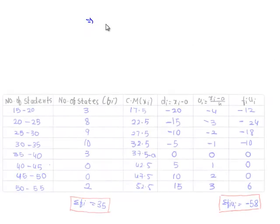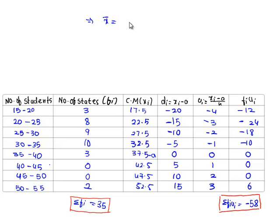It's x bar, x bar equals a, 37.5, plus h, it's 5, into u bar. It's sigma of fiui, it's minus 58, by sigma fi, it's 35.